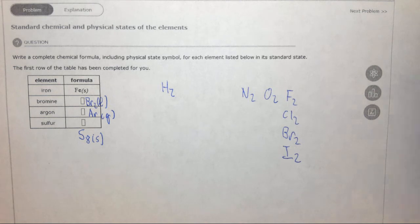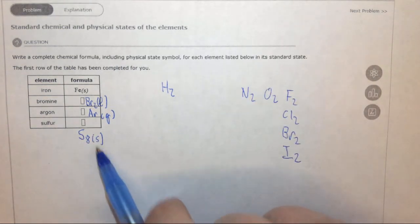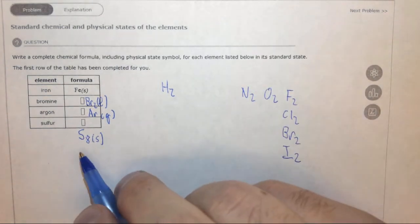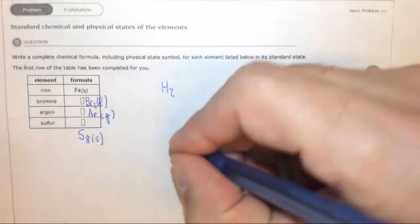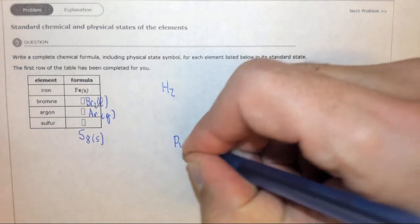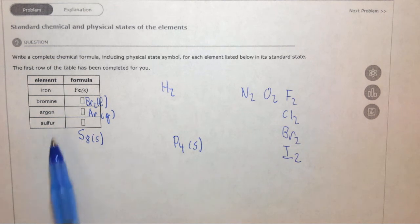Another example of an element that has many atoms is phosphorus, which is P4, which is also a solid. It's not asked here, but it is available on some other questions.